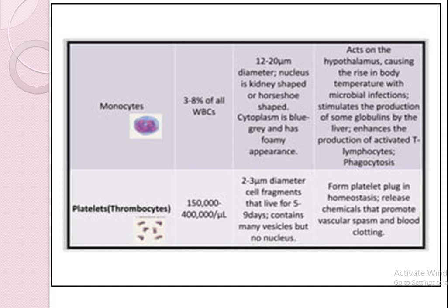Platelets — another name for platelets is thrombocytes. The total count of thrombocytes is 150,000 to 400,000 per microliter. Their size is 2 to 3 micrometers in diameter. They are involved in hemostasis.